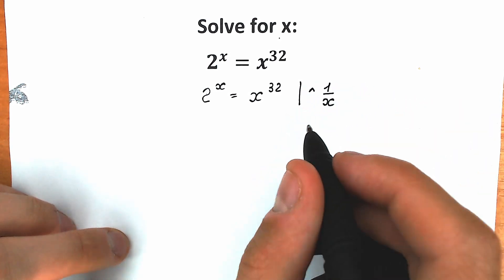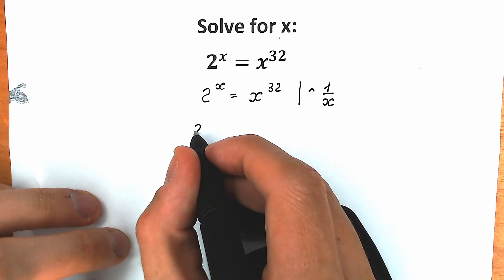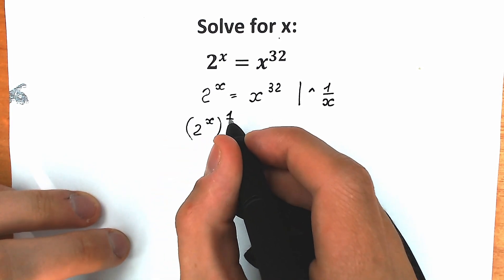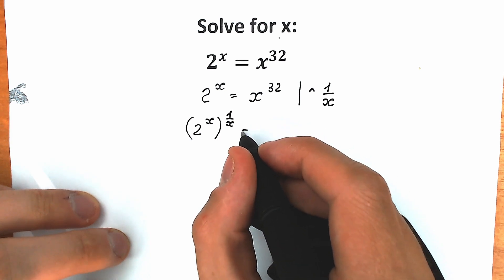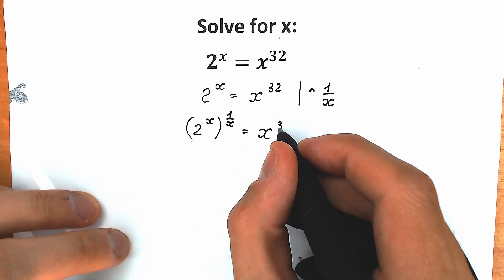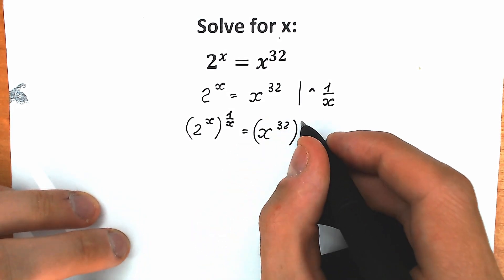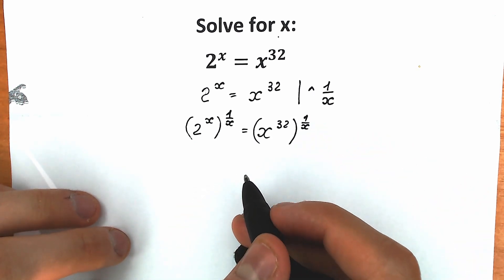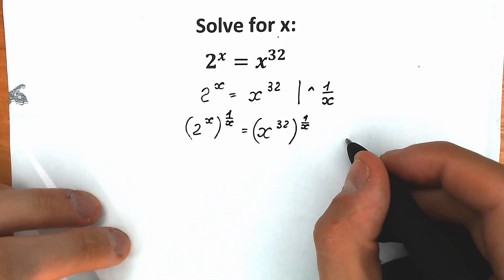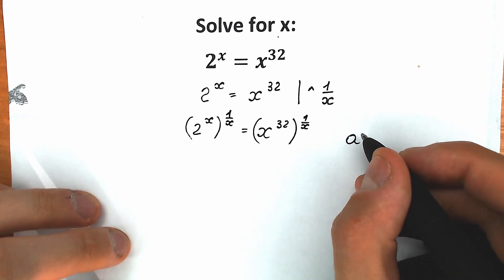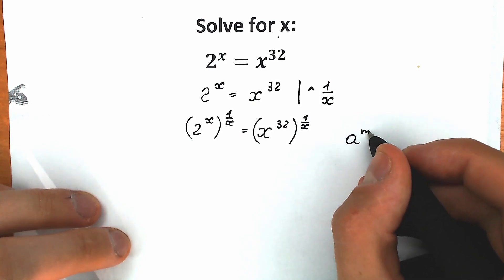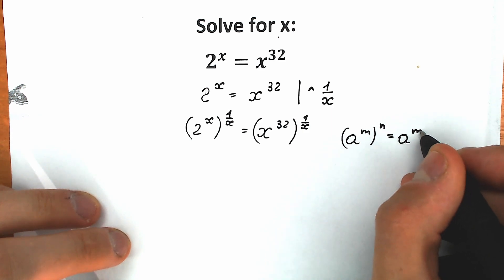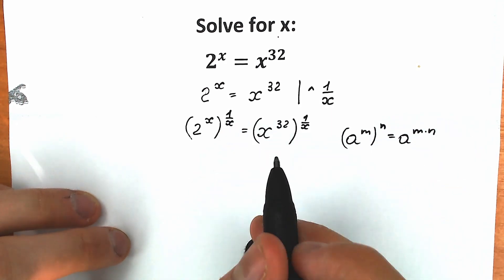When we raise our left side — 2 to the power x — we raise it to the power 1 over x, and we do the same with our right side: x to the power 32 raised to the power 1 over x. We need to know a basic school power rule: if we have a to the power m raised to the power n, it equals a to the power m times n. So we multiply our powers.